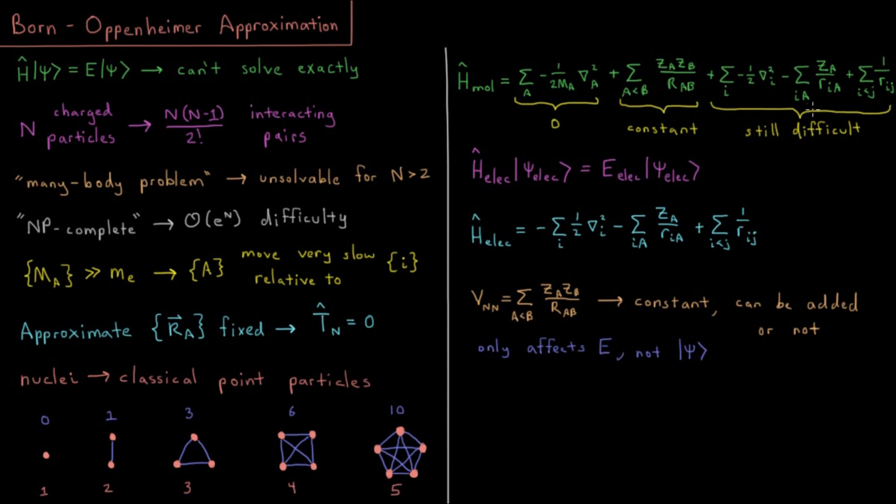And for the rest of the terms we have, electron kinetic energy, electron nuclear attraction, electron-electron repulsion, these are still difficult. And as of yet, we still haven't discussed the way that we can go about solving those.